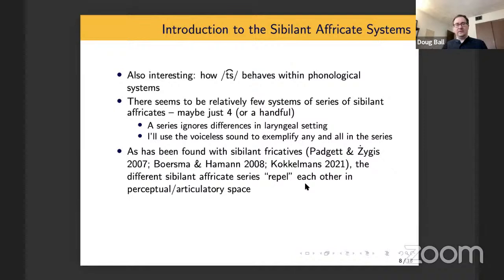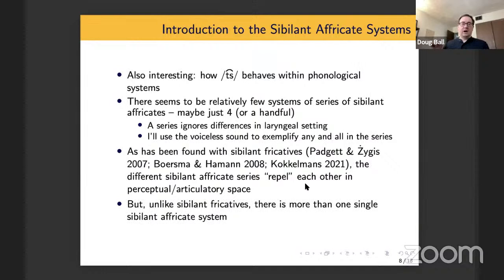It's interesting to compare sibilant affricates with sibilant fricatives. So sibilant fricatives have been an area that people have been looking at fairly closely for the last 15 to 20 years or so. That research does suggest that different sibilants kind of repel each other in perceptual or articulatory space. So they don't bunch together very close in place and they're usually quite separate and that same sort of thing seems to be going on with sibilant affricates too. What is different from sibilant fricatives is that sibilant affricates actually have more than one single sibilant series system. It seems that sibilant fricatives, if there's one, it's usually some kind of S, but if there's one affricate, there could be a couple of different possibilities I've found.